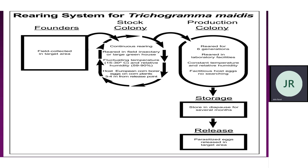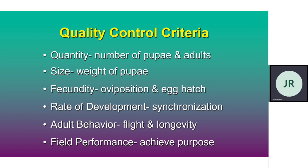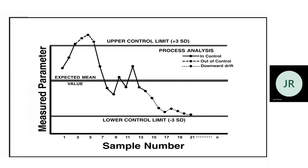Periodical production on a large colony — we are talking about the production of live creatures, not machines or goods. If it is an insect for biological control, we have to ensure it is stored properly, available in the season when required, live, and ready for action. Considerations include: appropriate biotypes, rearing proficiency, behavioral genetic isolation, strain replacement, size, fecundity, oviposition, egg hatching, dormancy, adult behavior, numbers, measurements, standard deviation, and sample number.